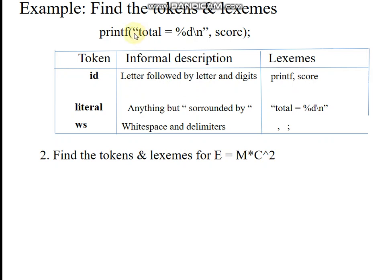The open parenthesis is a symbol token. Whatever content is available between the double quotes is a literal token. The comma is a delimiter — it is treated as a separator, and the comma itself is its own value.